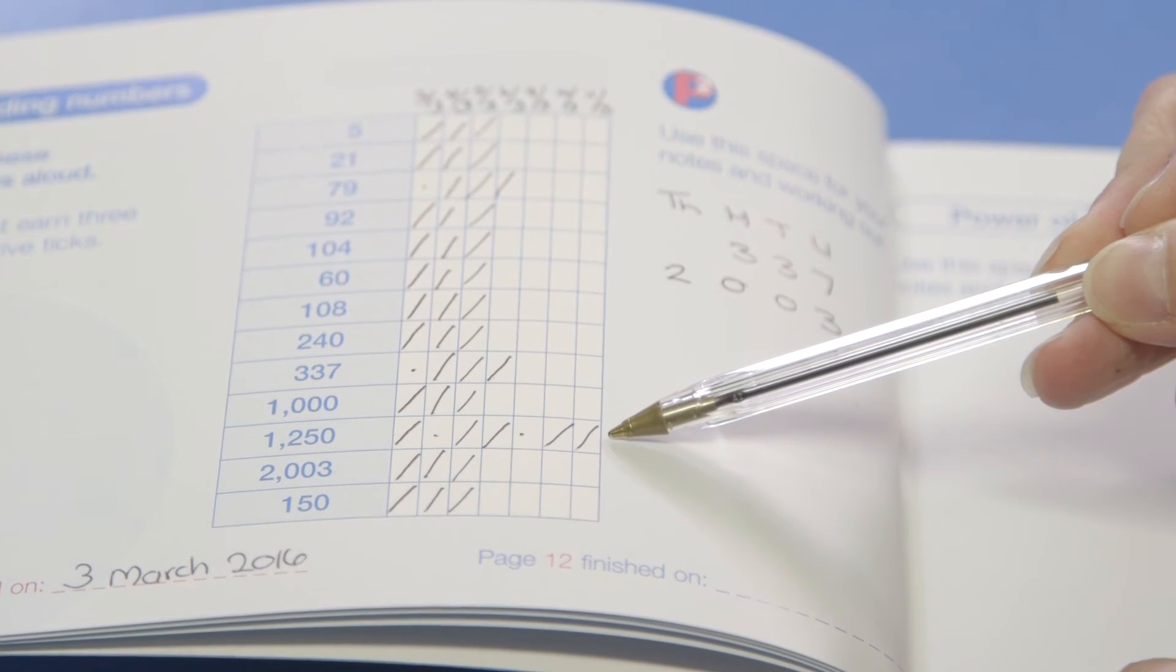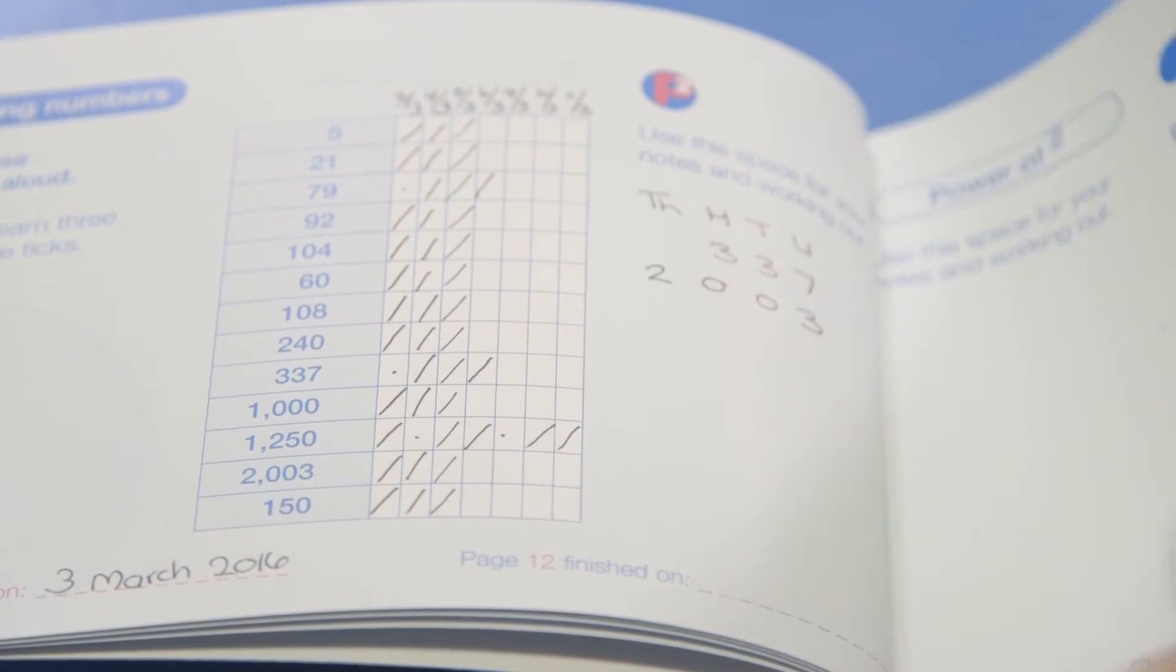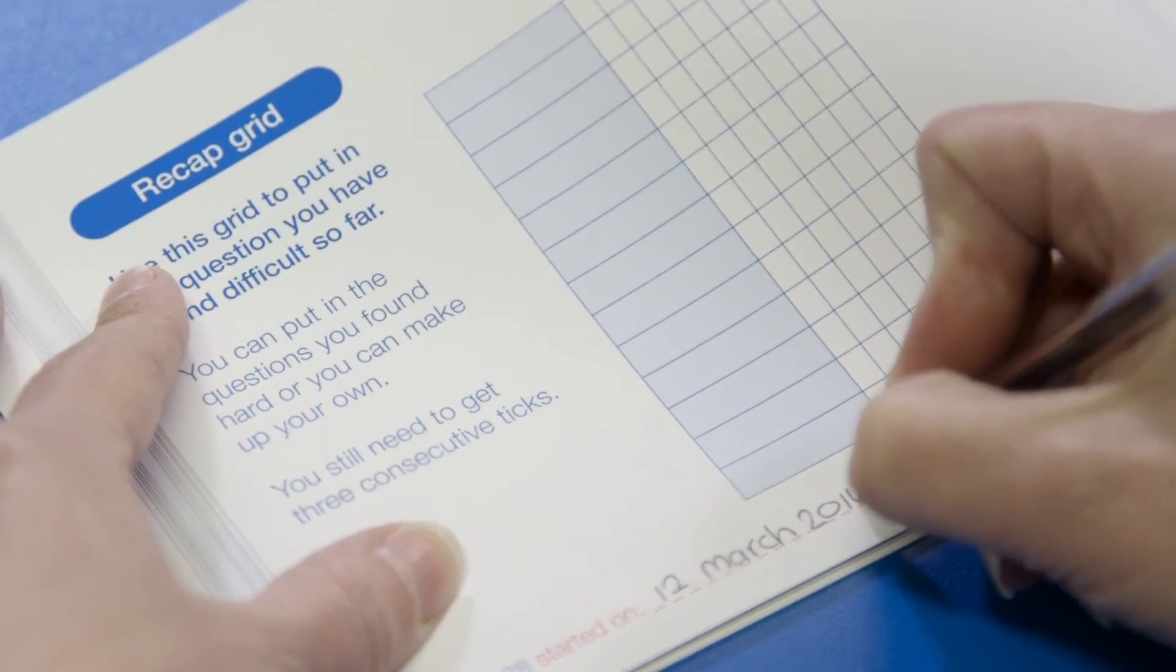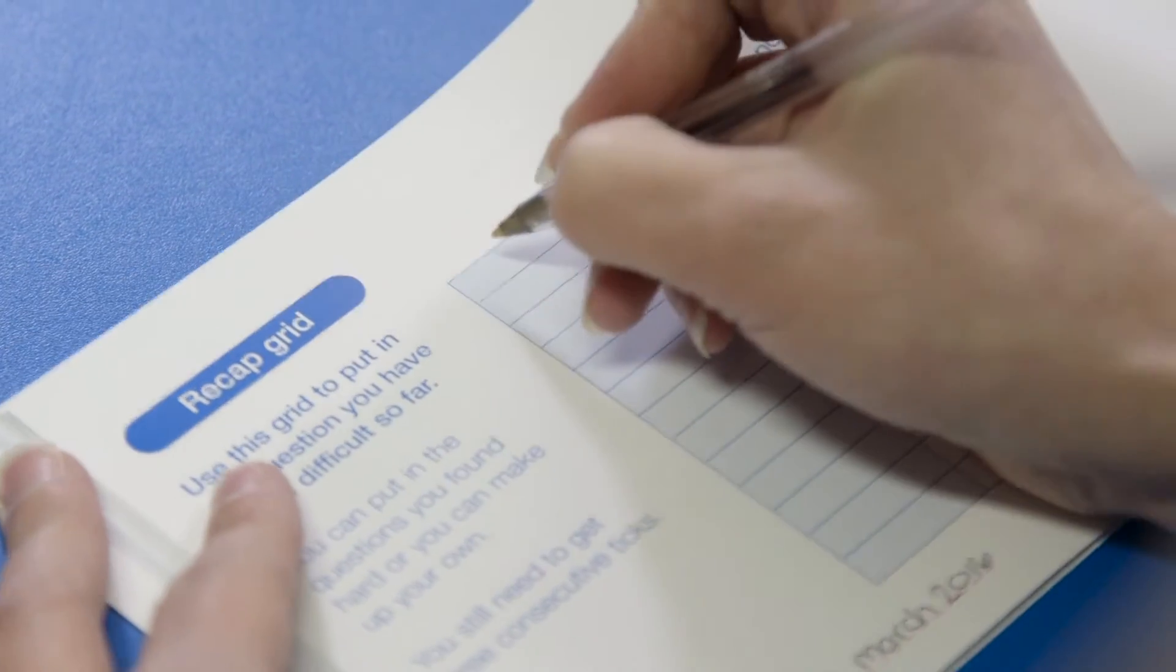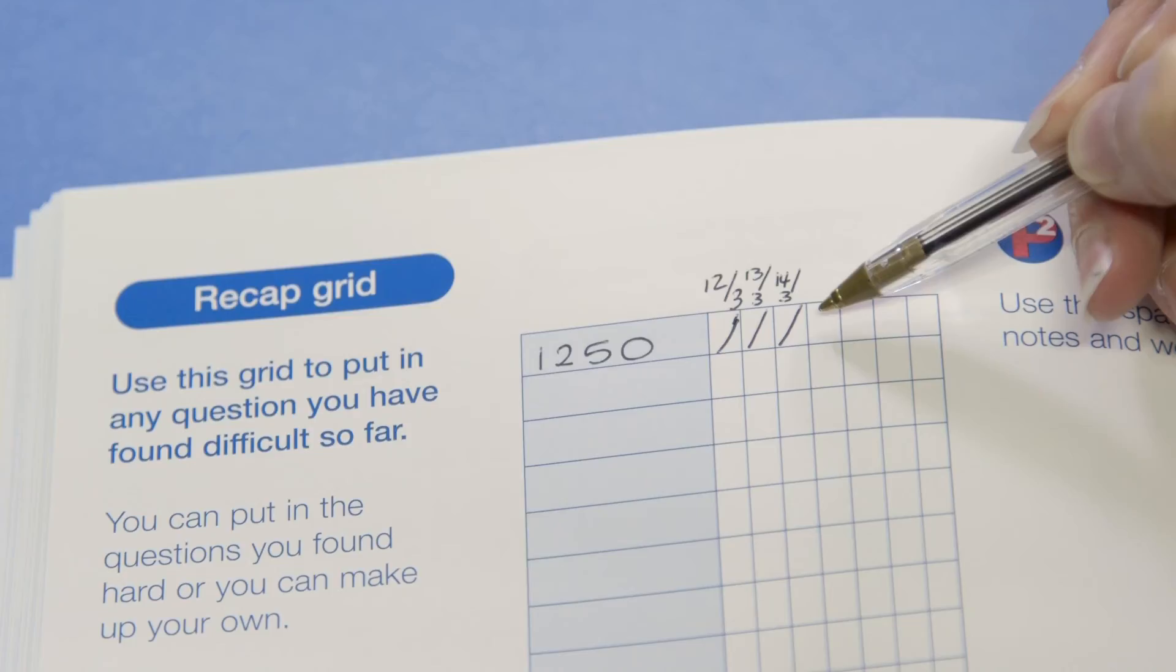If you reach the end of the grid and there's still a question which hasn't got three consecutive ticks, write that question in the next recap grid. These can be found at regular intervals throughout the book. Continue to ask that question until there are three consecutive ticks.